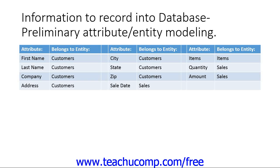So what would one do with the column of Item? In the relational model, each field or column of information is an attribute of an entity. So for what entity is Item an attribute? In other words, with what entity does the Item — which is a description of the item purchased — have a one-to-one relationship?